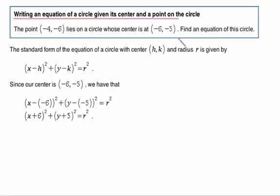Here we'll look at writing an equation of a circle, given its center and a point on the circle. So our problems look like this. It says the point (-4, -6) lies on a circle whose center is at (-6, -5). Find the equation of this circle.